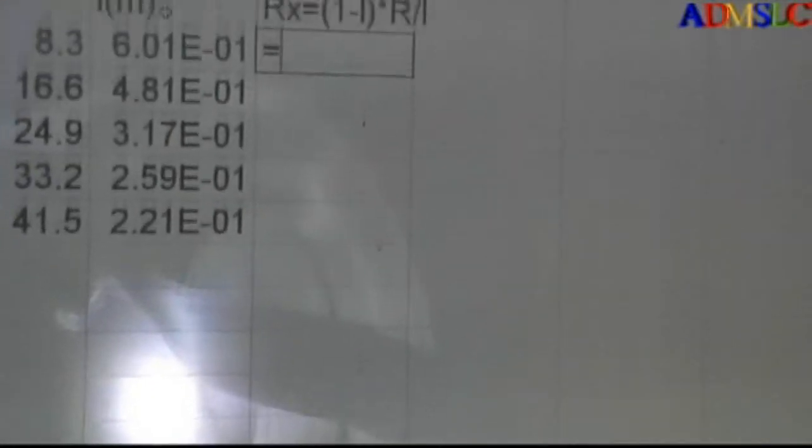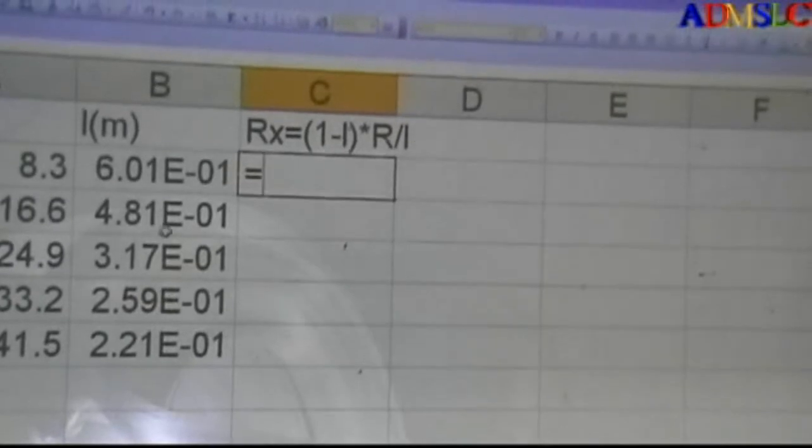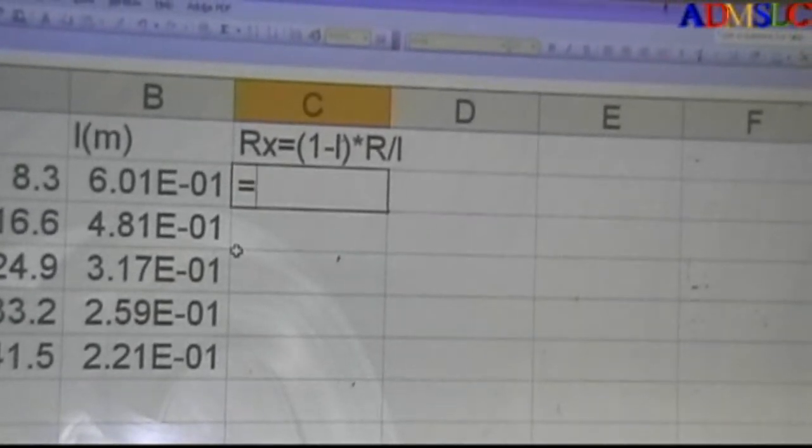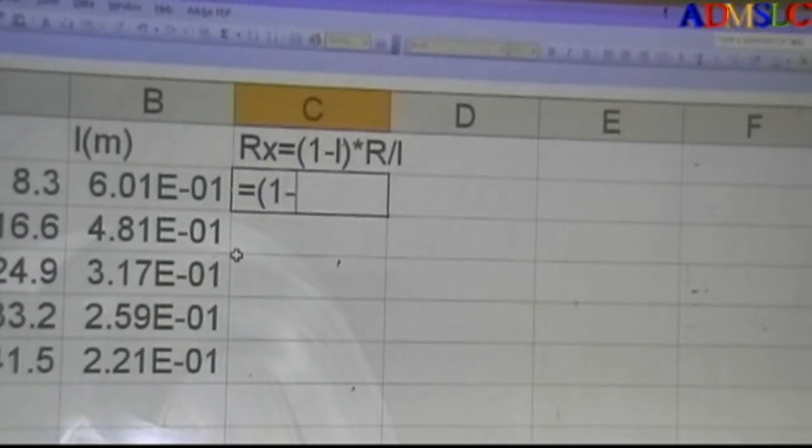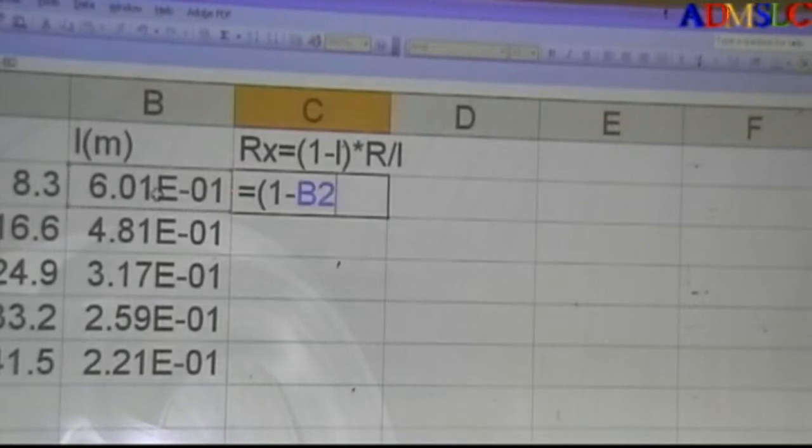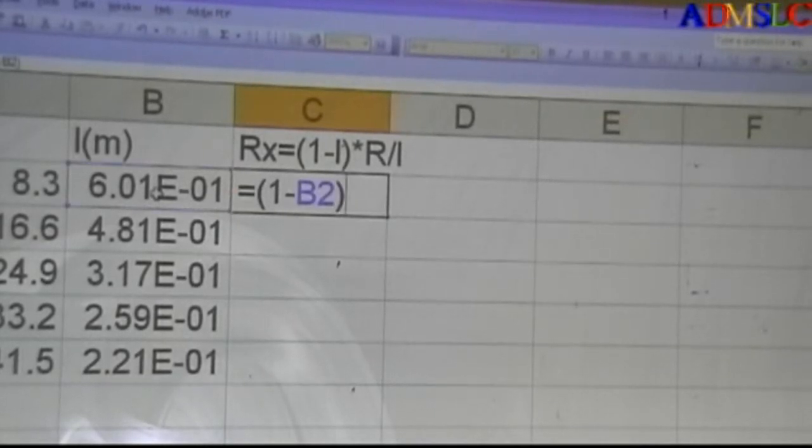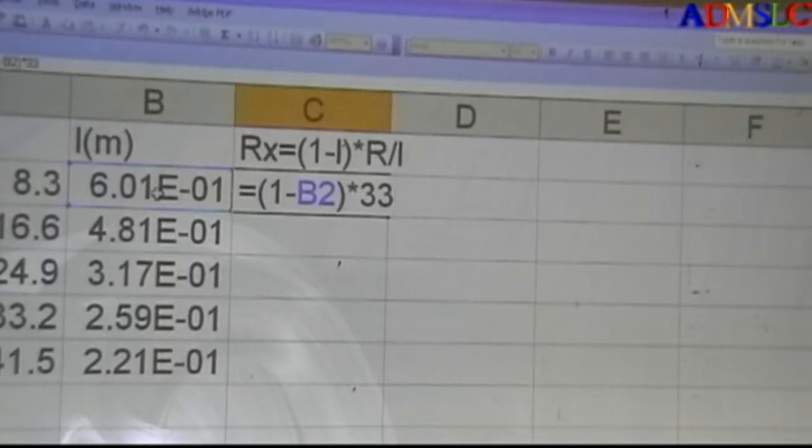So now this is equal 1 minus L, mean this is 1 minus this, times 33, because R is 33, right, divide on L. And this is B2.